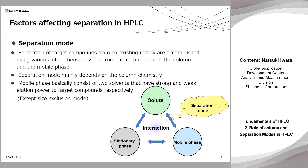Although there are three kinds of interactions between these three factors, let's focus on the interactions except for the one between the stationary phase and the mobile phase. The separation mechanism is very simple. If the interaction between solute and mobile phase is stronger, the solute will elute faster. If the interaction between the solute and the stationary phase is stronger, the solute will elute slower. The difference in the strength of affinity of the solute to the mobile phase and to the stationary phase results in a different moving speed. That's why target compounds can be separated in the column.